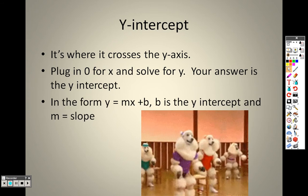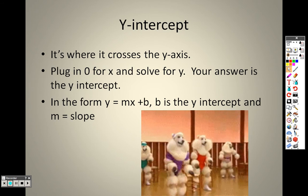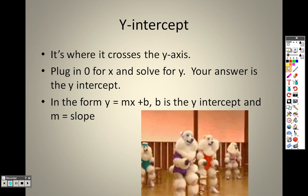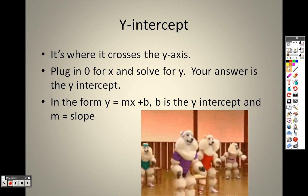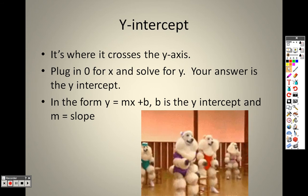The easiest thing here is you normally have the form y equals mx plus b, where m is the slope and b is the y-intercept. So b stands for the y-intercept in that problem, and the m stands for the slope.